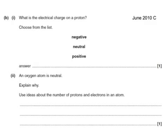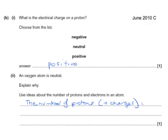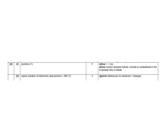A couple of other questions. What's the electrical charge on a proton? Choose from this list. Well, it's positive because it's got a plus charge. An oxygen atom is neutral. Explain why. Talk about the number of protons and electrons. It's electrically neutral because the number of protons plus charges is equal to the number of electrons, which are minus charges. On the mark scheme here you can see you just have to say it's got the same number of electrons and protons. It says ignore references to charges. That doesn't mean it's wrong, but you don't get anything about the charges. You've got to say that there are the same number of electrons and protons.